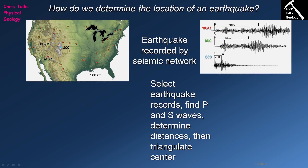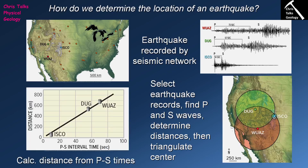P waves and S waves move through the Earth's crust in a relatively consistent way. So we can use the difference between the arrival of the first P wave and the first S wave to work out the distance from the monitoring station to the earthquake. Looking at this graph, we have the three locations plotted, and the trend line — based on data collected from multiple earthquakes — shows that the greater the distance, the longer the gap between the first P and first S wave.